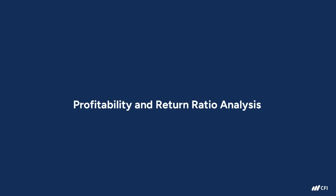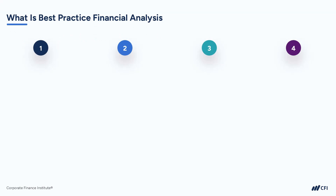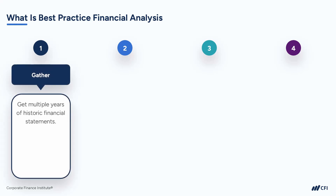Let's start by outlining a best practice approach to undertaking financial analysis. There are four essential steps that can help you gain valuable insight into a business's financial health and performance. The first step is to gather multiple years of historic financial statements. These statements typically include the income statement, the balance sheet, and the cash flow statement. By examining data from multiple years, you can observe patterns and trends, providing a more comprehensive view of a company's financial performance.